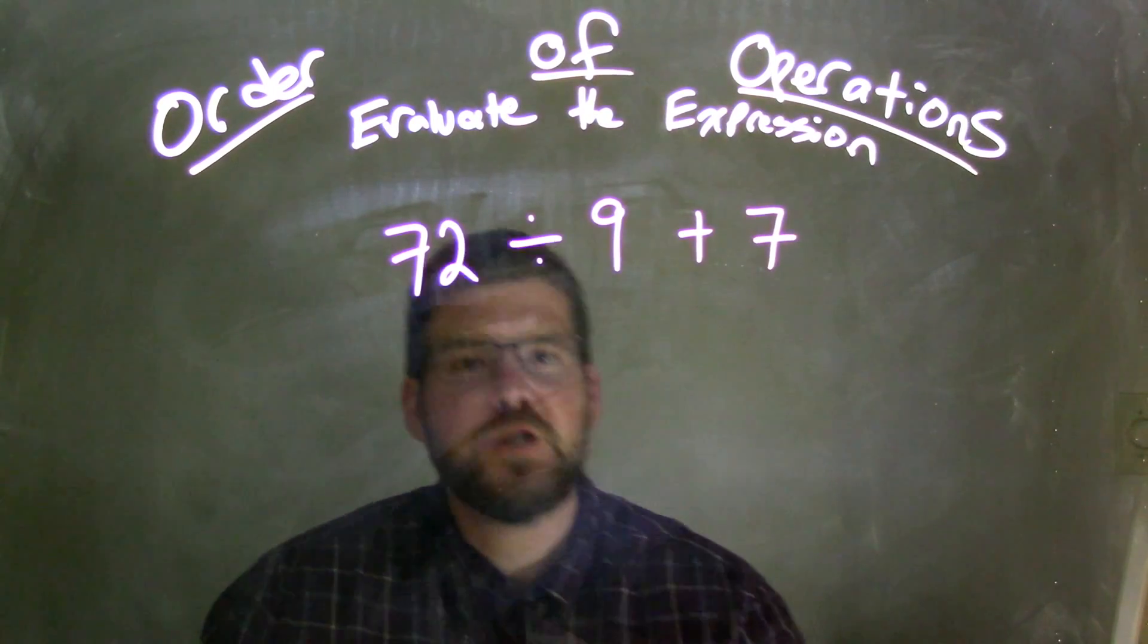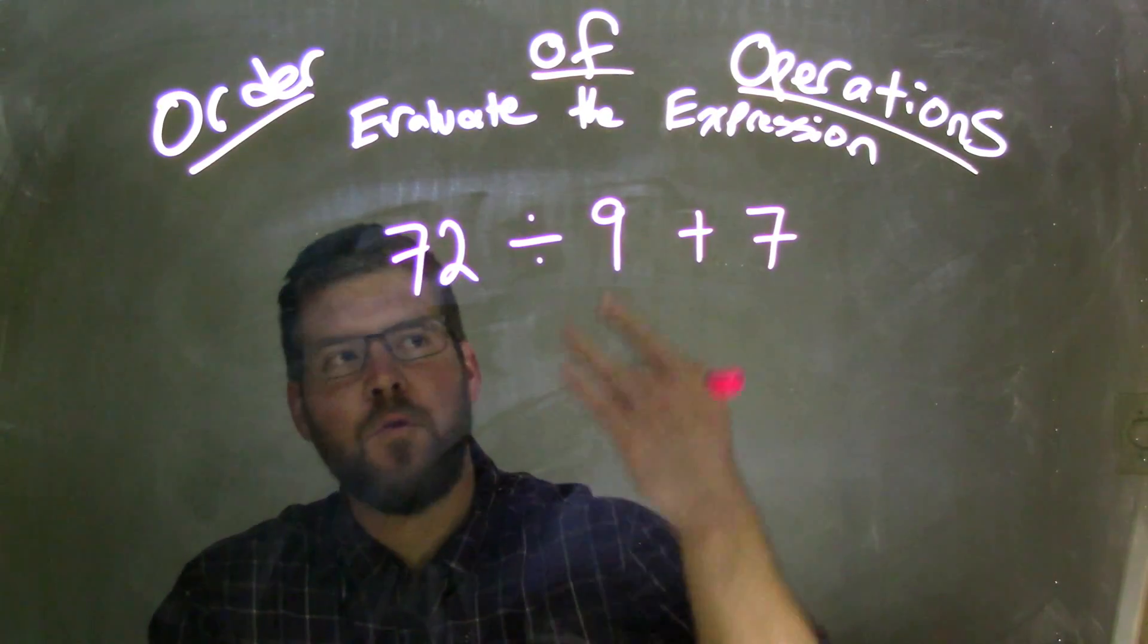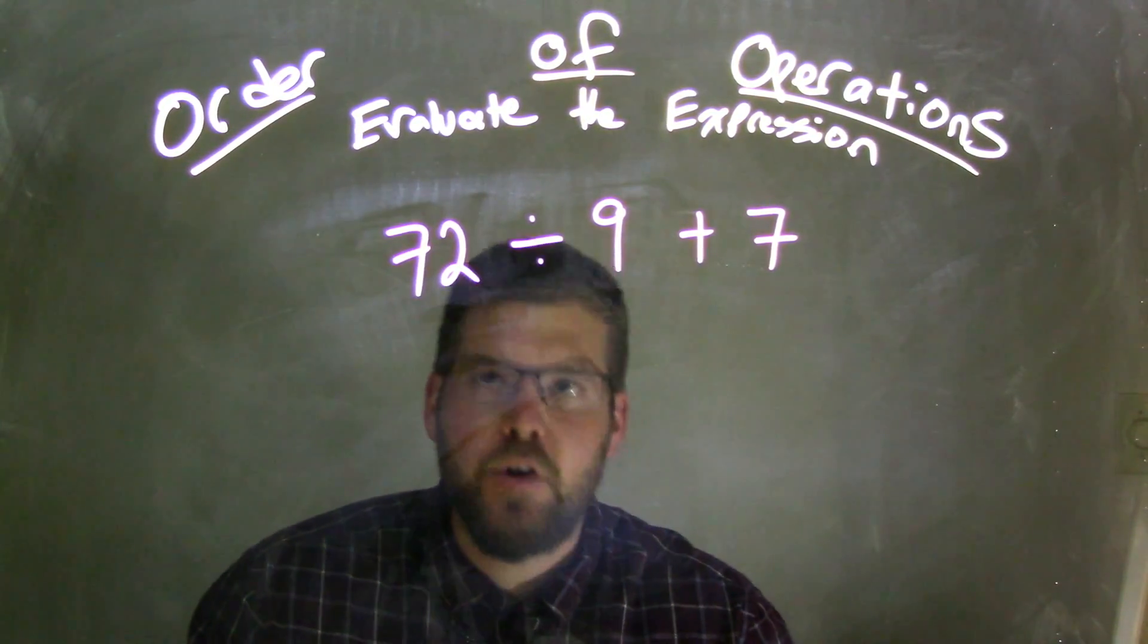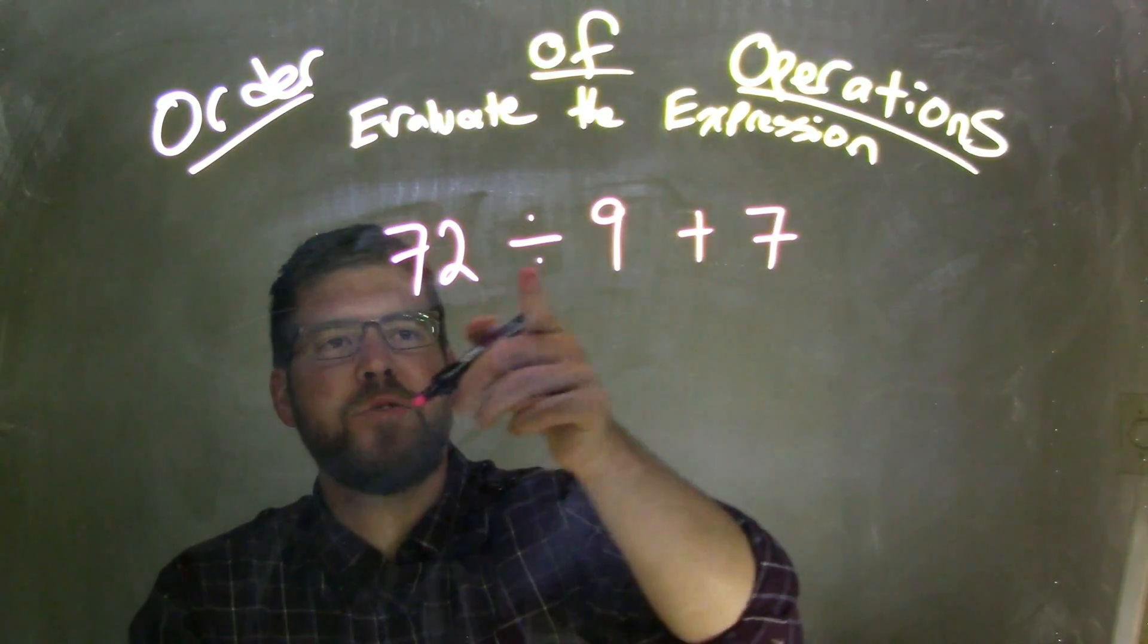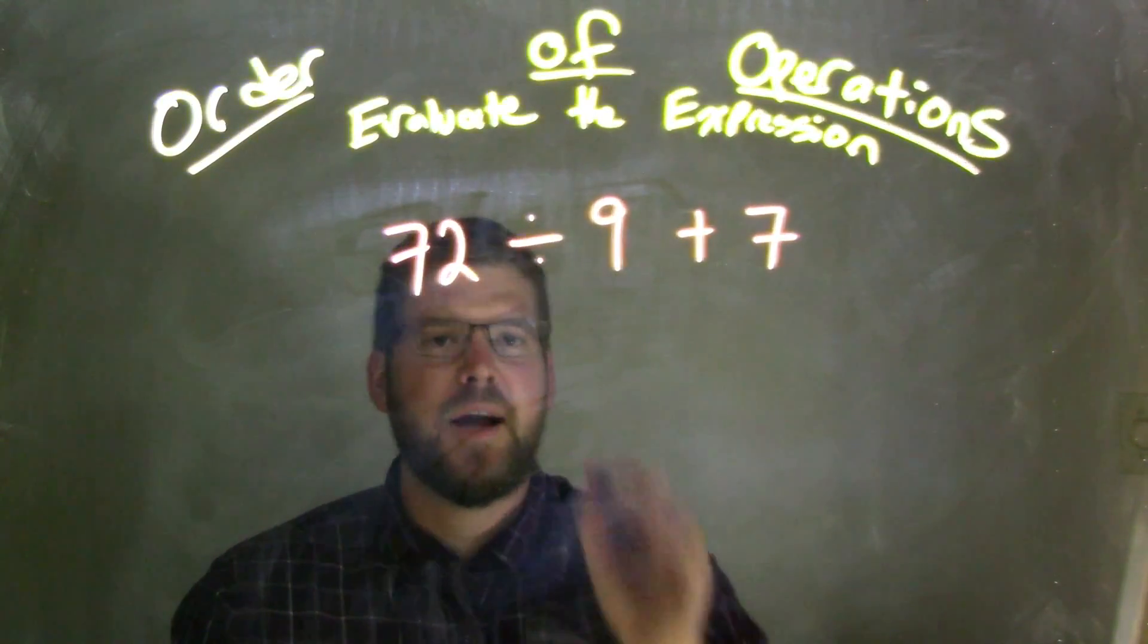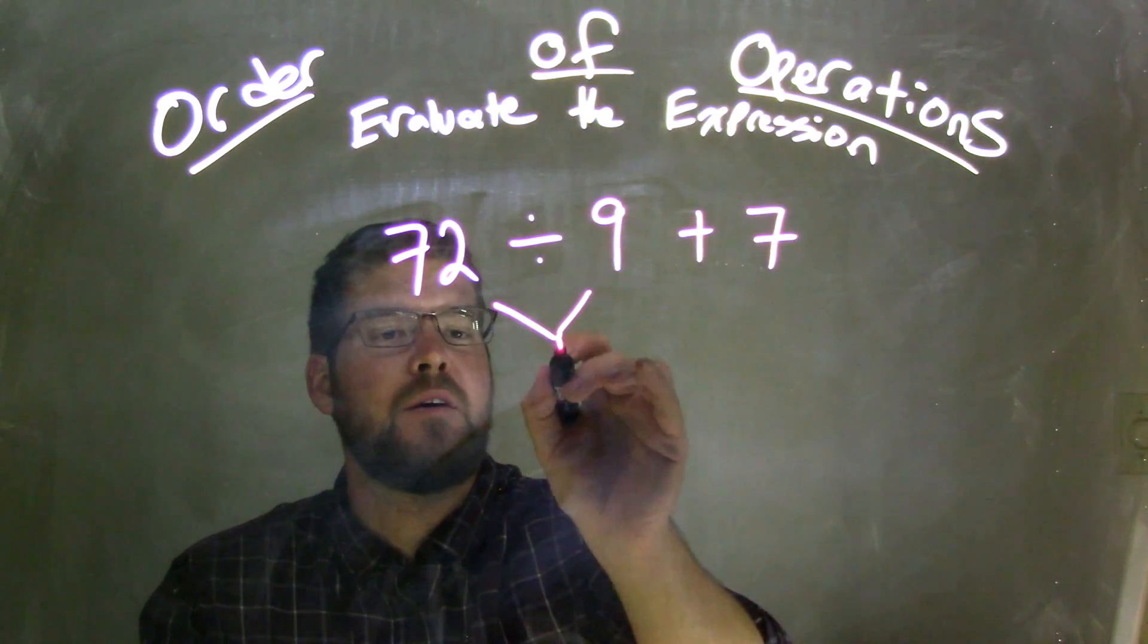In our order of operations, division comes before addition. So we need to take 72 and divide it by 9. 72 divided by 9 comes out to be 8.